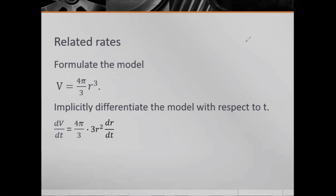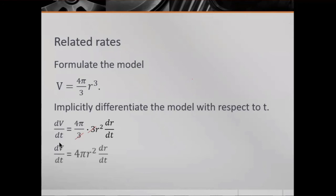The 3's cancel out, so we obtain: dV/dt = 4πr² · dr/dt. Now we substitute our known values.